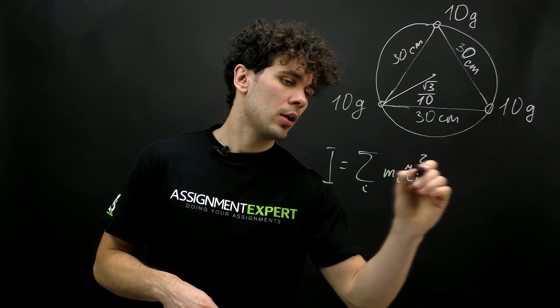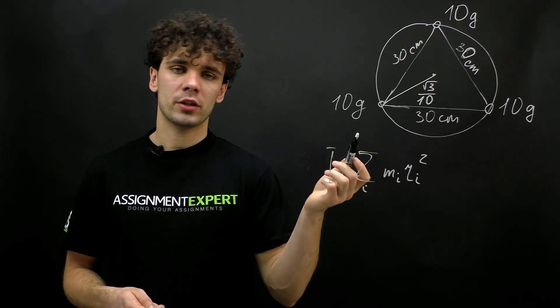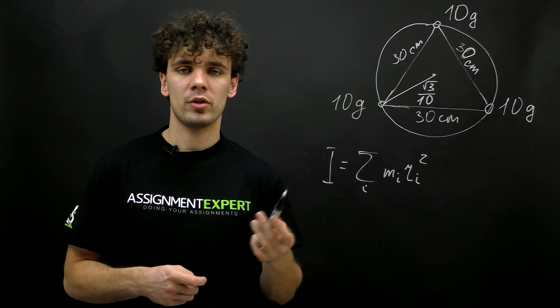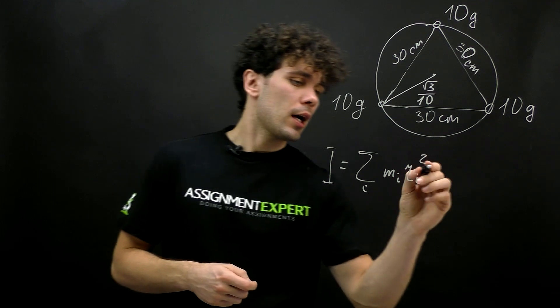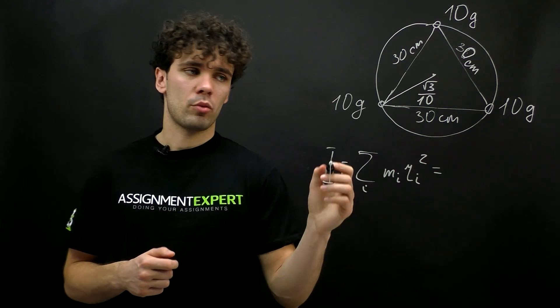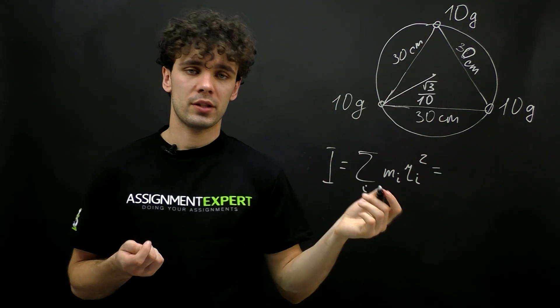Where m_i is the mass of the ith particle and r_i is the perpendicular distance from the ith particle to the axis.